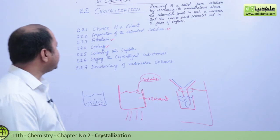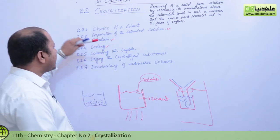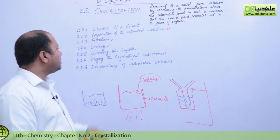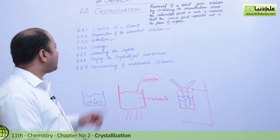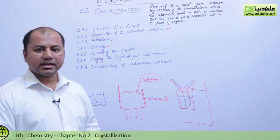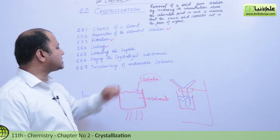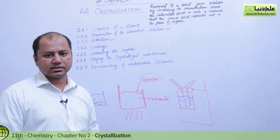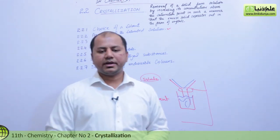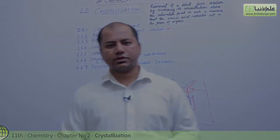So these are the major three steps in the crystallization process. First, you have to create a saturated solution, then you have to filter properly, and then lastly, you have to do slow cooling. After that students, we will talk about collecting the crystals, drying of the crystals, and decolorizing of the crystals. I will explain to you in my next lecture. Thank you so much.